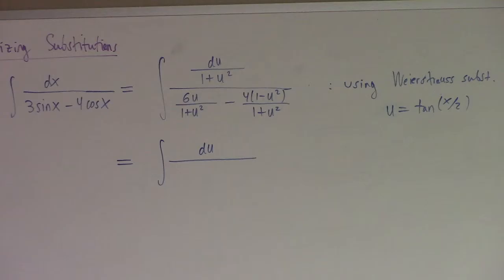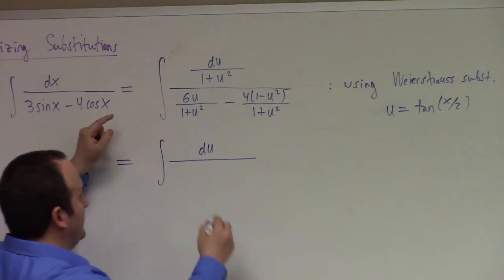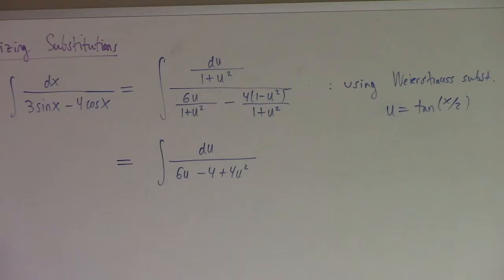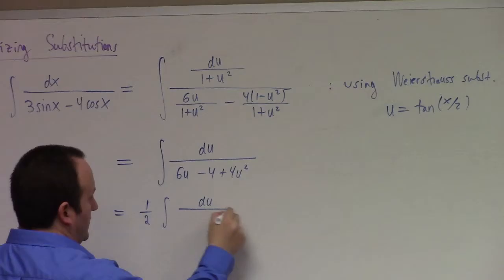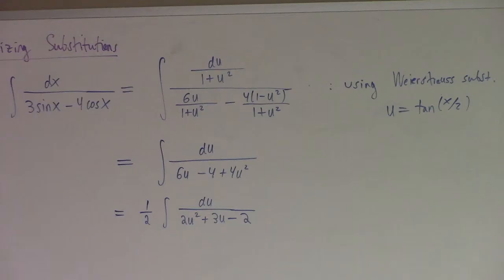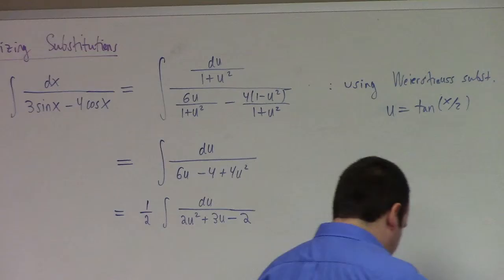How do I simplify this? It's a rational function, but rather inelegantly written. Multiply the top and bottom by 1 plus u squared to clear out the denominators. So upstairs I've got du, and downstairs I've got 6u minus 4 plus 4u squared. I'll factor out a half and get du over 2u squared plus 3u minus 2.